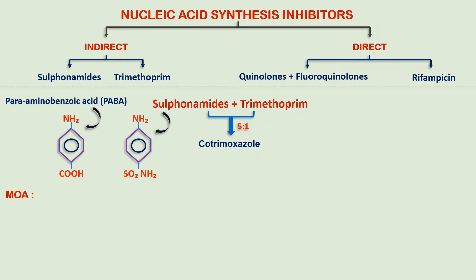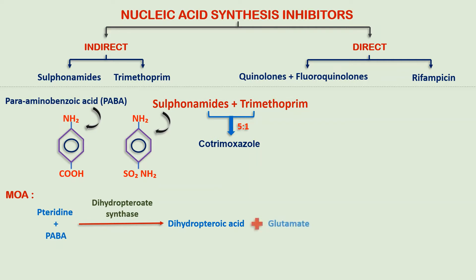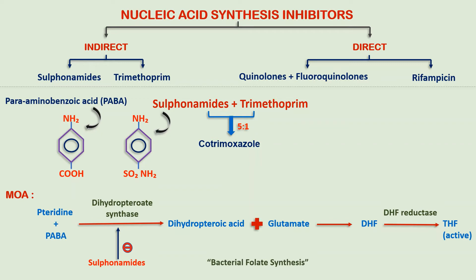To understand the mechanism clearly, we will first see how bacteria synthesize folic acid. First, pteridine combines with PABA to form dihydropteroic acid with the help of the enzyme dihydropteroate synthetase. Then dihydropteroic acid is combined with glutamate to form dihydrofolate, which is then converted into tetrahydrofolate by the enzyme dihydrofolate reductase. When sulfonamides come into play, they inhibit the enzyme dihydropteroate synthetase, thereby inhibiting bacterial folate synthesis.